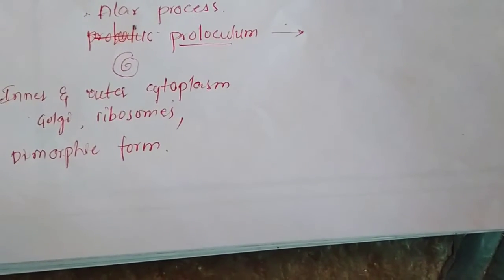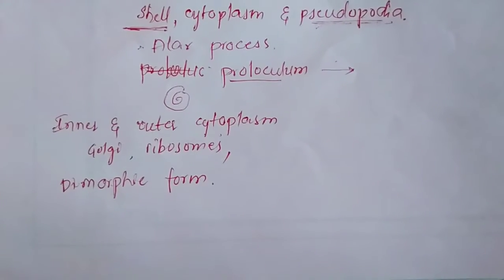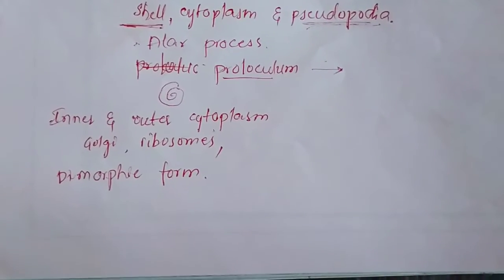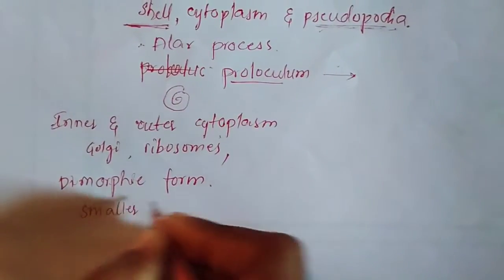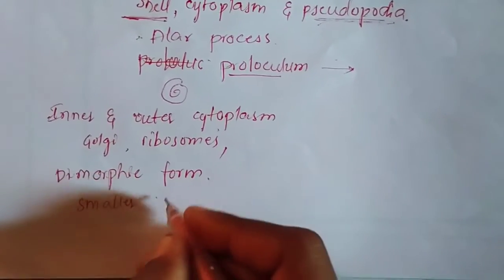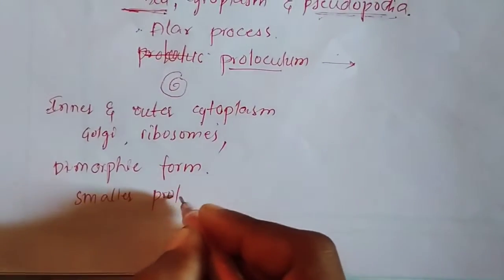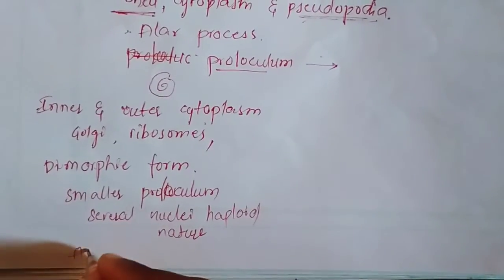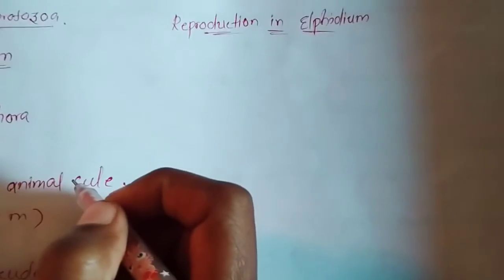The megalospheric form has a larger proloculum, undergoes sexual reproduction, has a larger nucleus, is uninucleate, and is diploid in nature. The microspheric form has a smaller proloculum, with several nuclei that are haploid in nature, and it undergoes asexual reproduction.